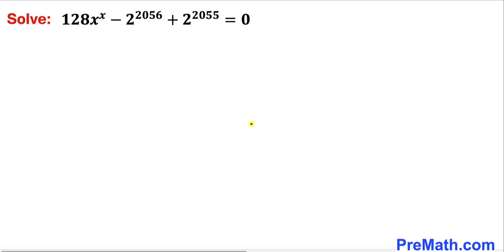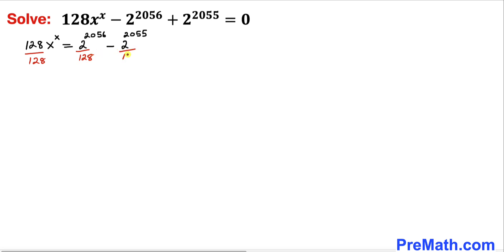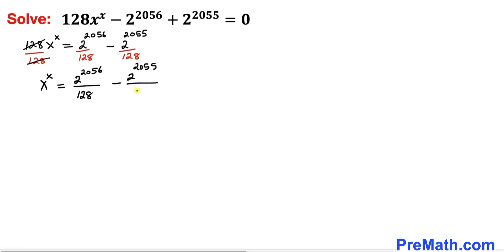Let's go ahead and get started with the solution. The very first thing we are going to do is move the constant terms to the right hand side. Now let's divide across the board by 128 — we divide each and every term by 128, and the 128 cancels. So we end up with x power x equals 2 power 2056 divided by 128, minus 2 power 2055 divided by 128.